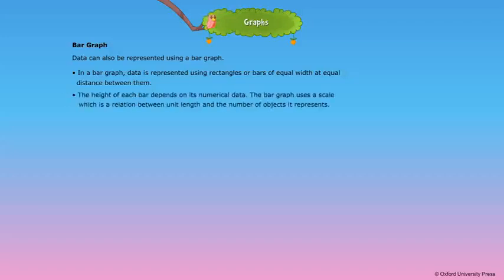Data can also be represented using a bar graph. In a bar graph, data is represented using rectangles or bars of equal width at equal distance between them. The height of each bar depends on its numerical data.